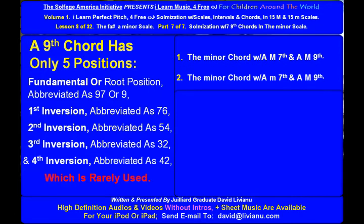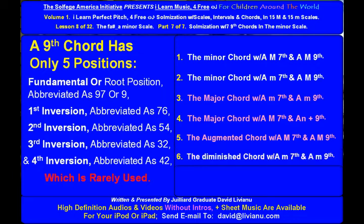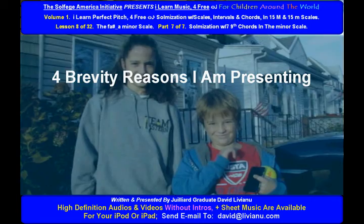The minor chord with a major seventh and a major ninth. The minor chord with a minor seventh and a major ninth. The major chord with a minor seventh and a minor ninth. The major chord with a major seventh and an augmented ninth. The augmented chord with a major seventh and a major ninth. The diminished chord with a minor seventh and a minor ninth. And the diminished chord with a diminished seventh and a minor ninth.